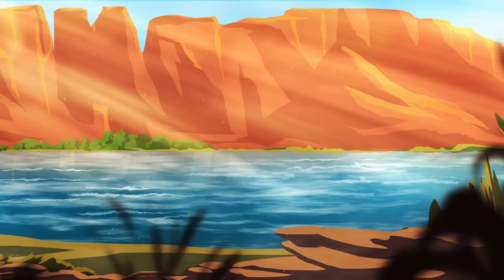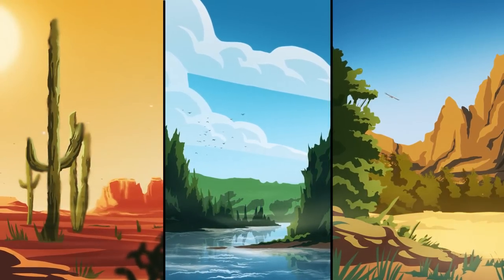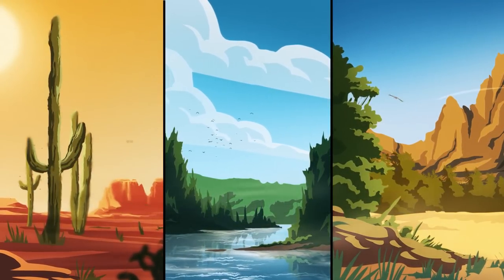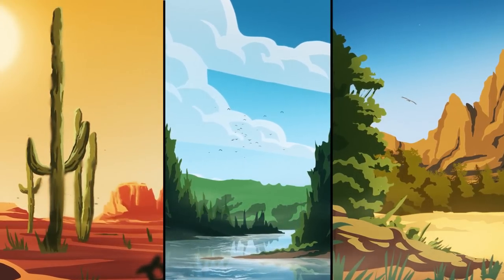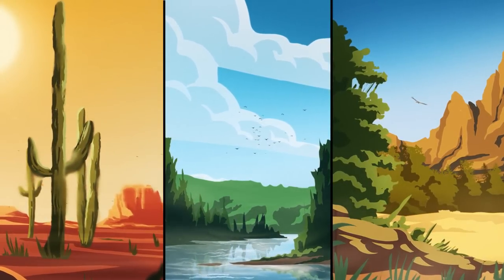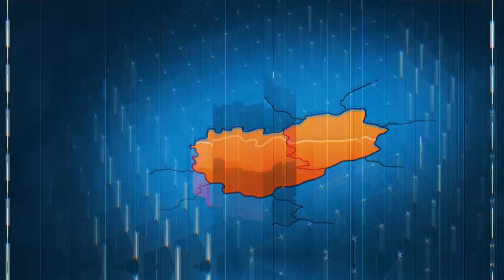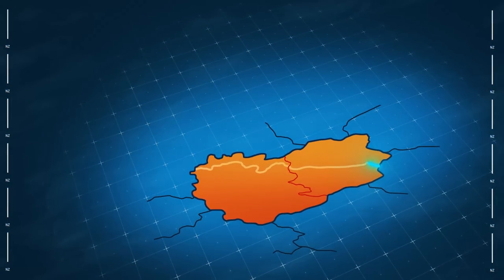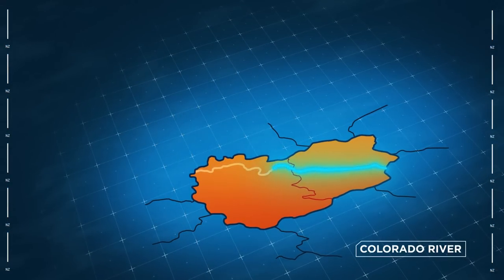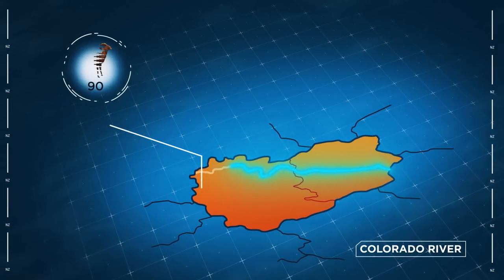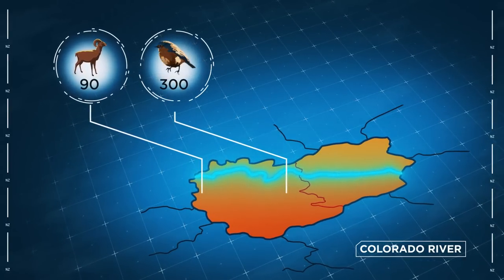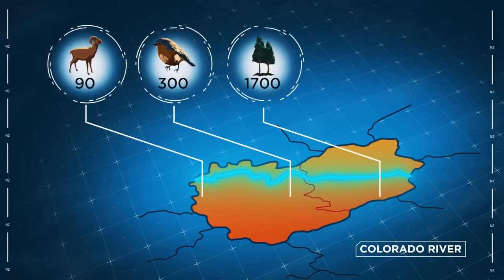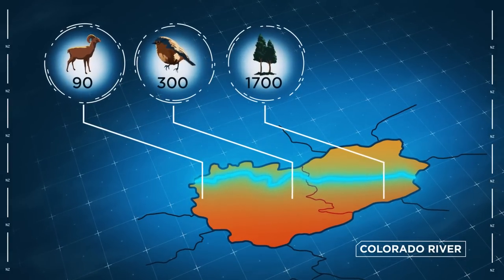Winding its way across the desert, the Colorado River supplies fresh water to a variety of arid ecosystems, including desert scrub, boreal forests, and pinion juniper woods. Along the Grand Canyon, the Colorado River supports more than 90 species of mammals, 300 species of birds, and 1,700 species of plants.